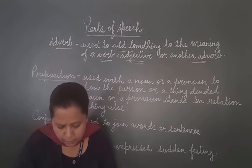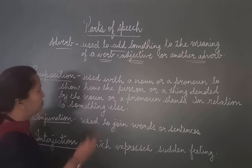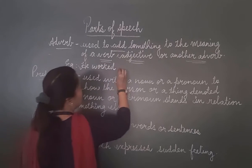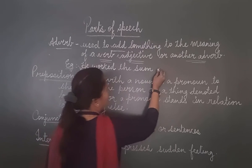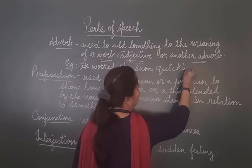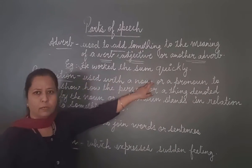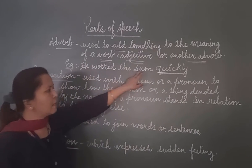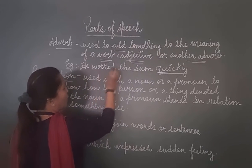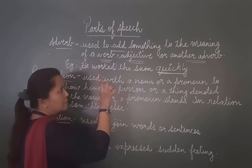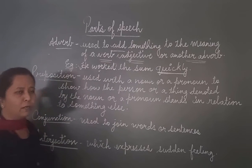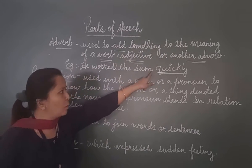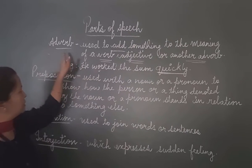Now if we see the example: 'He worked the sum quickly.' From this we come to know that quickly is an adverb because how did he work? Quickly. It is adding something to the meaning of the verb. And what is the verb here? Worked. He worked the sum quickly. So quickly is an adverb.